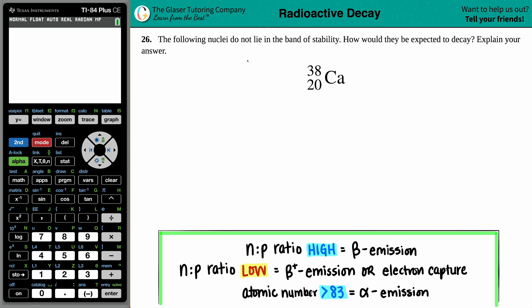Number 26. The following nuclei do not lie in the band of stability. How would they be expected to decay? And then explain your answer.